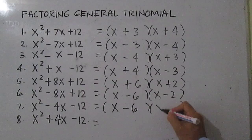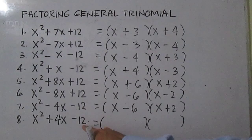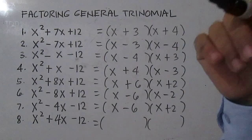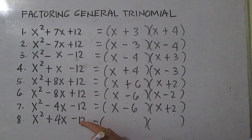For number 8, you have negative 12, so the factors are negative 2 and positive 6, because negative 2 times 6 gives negative 12 and negative 2 plus 6 is positive 4. So you have X plus 6 and X minus 2.